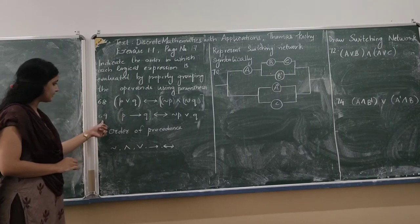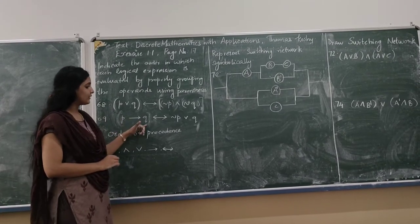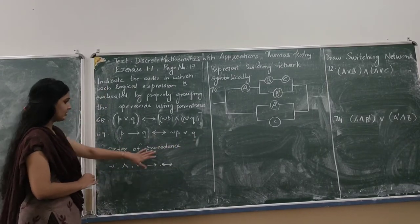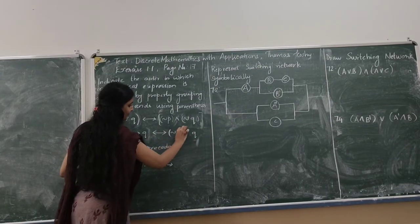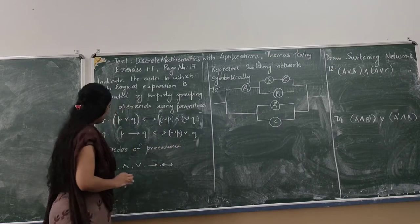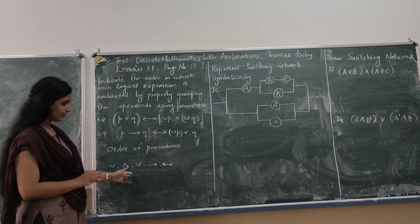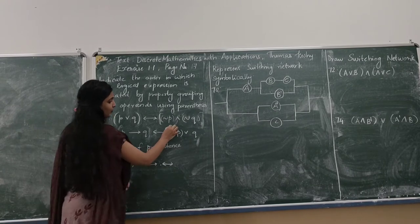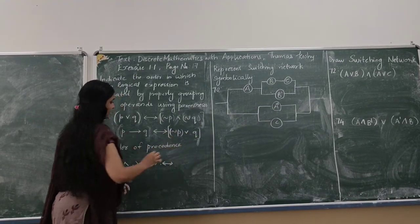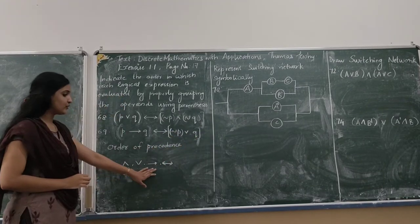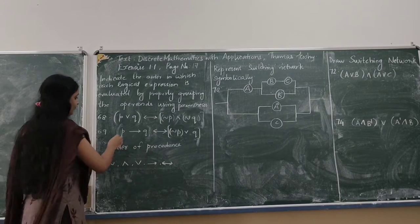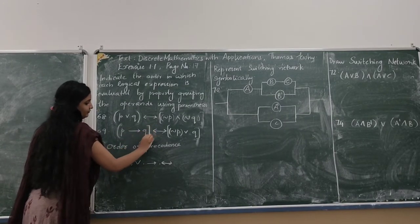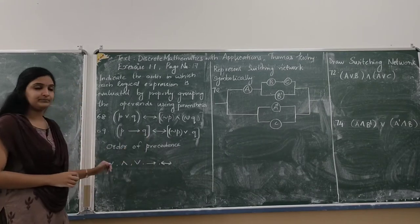In the next question: P implies Q biconditional (negation V or Q). We first check for negation and group it. There is no and operator, so we move to the or operator and group that. Then we apply the implies operator and group that. In this way we can group the operands using parentheses.